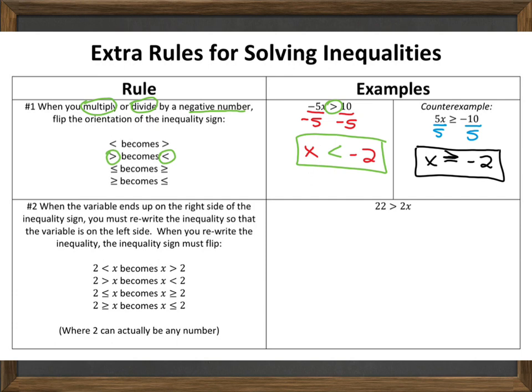Let's jump into this example and see what happens. If 22 is greater than 2x, I divide both sides by 2, which gives me 11 is greater than x. So if 11 is greater than x, that means by definition that x is less than 11. We have to rewrite this so that everything is flipped.